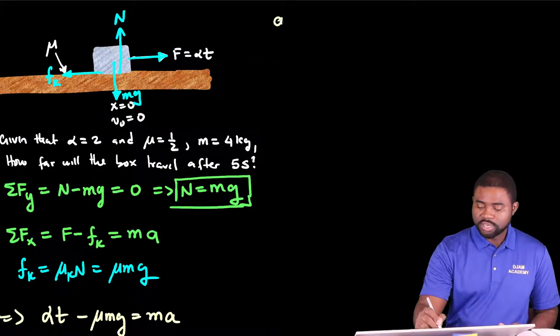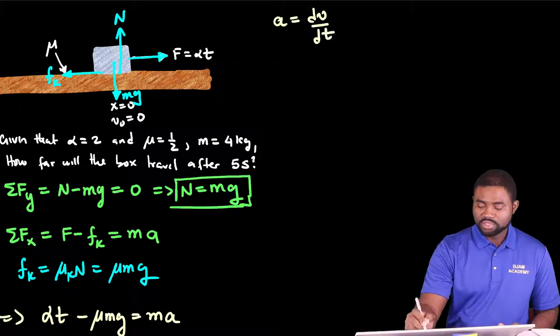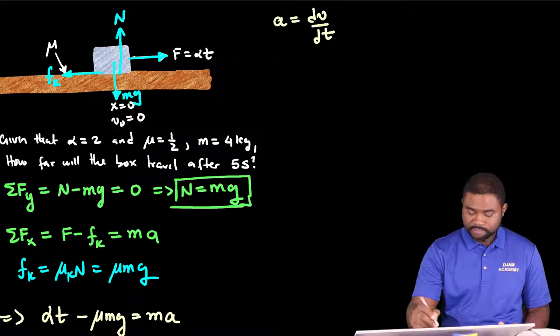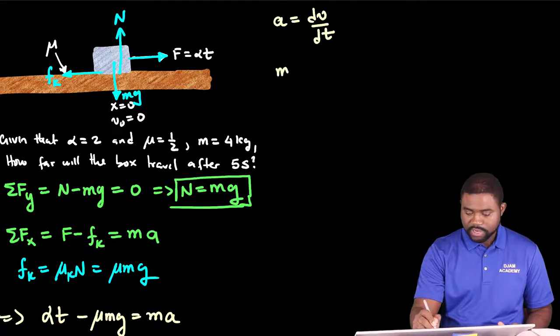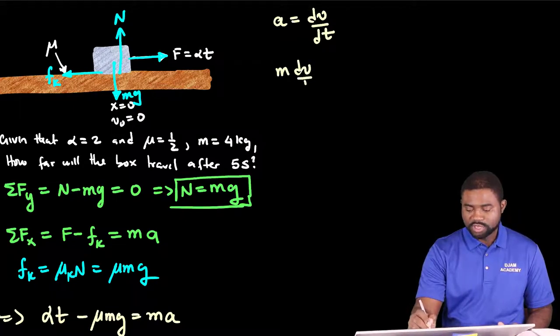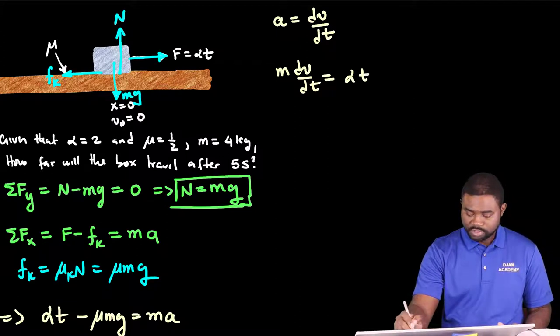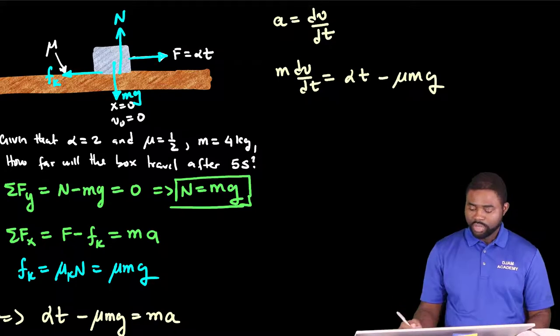Remember that A is equal to Dv over Dt. This means that M Dv over Dt is equal to alpha T minus mu Mg.